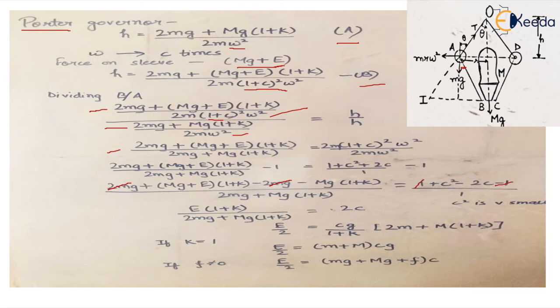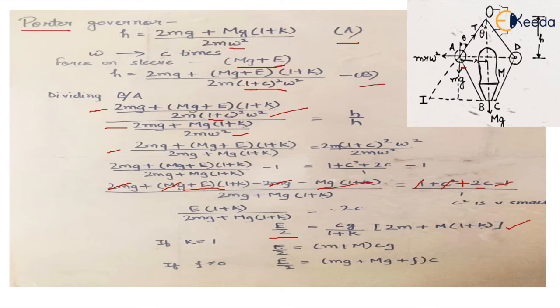Opening the bracket on the LHS, the mg·(1 + k) terms cancel out, and we are left with E·(1 + k) / (2mg + Mg·(1 + k)) = 2c on the RHS. Since the effort is defined as E/2 — the mean force — we rearrange to get: E/2 = c · g · (2m + M·(1 + k)) / (1 + k) · ... giving the effort formula involving the speed change factor c, ball mass m, and sleeve mass M.